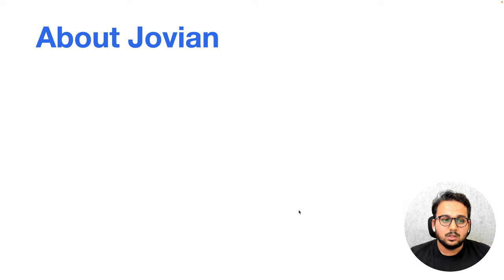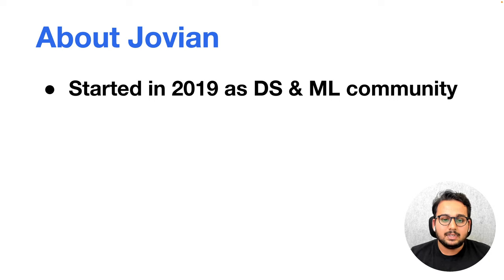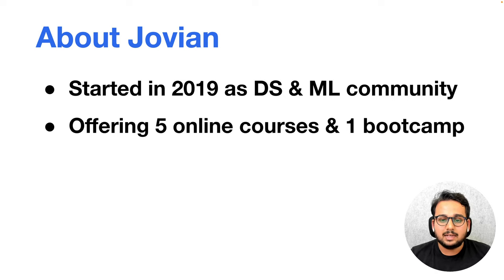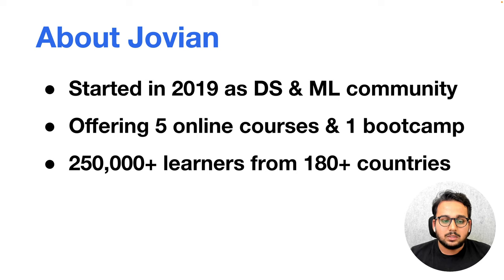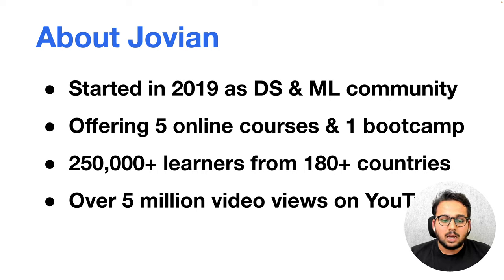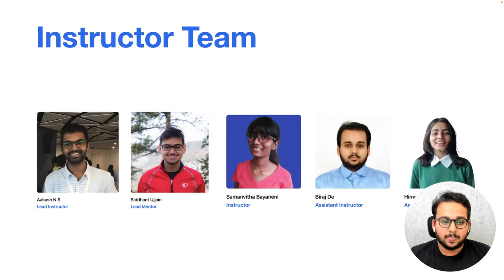So, about Jovian: Jovian started in 2019 as a data science and ML community, and we soon realized that a lot of resources were required for this community, so we created five online courses and one boot camp. There are currently about 250,000 plus learners from 180 plus different countries, and more than five million video views on the Jovian YouTube channel.